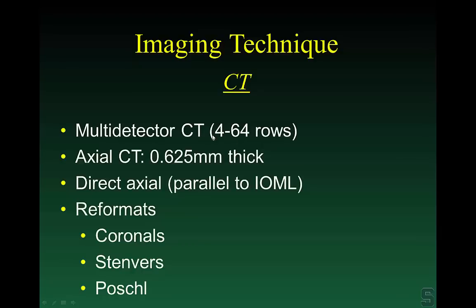I assume everybody's got multi-detector CT. At our institution we've got 64 slices — anywhere from 4 to 64 is fine. We perform axial 0.625 millimeter thick sections, acquire in the axial plane, and then reformat in the coronal plane. We also look at the Stenvers and the Poshels view.